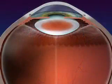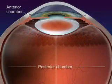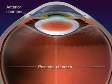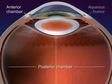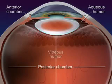The chambers are filled with a watery fluid that gives shape to the eye and helps refract the light rays. The anterior fluid is called the aqueous humor, and the posterior fluid is called the vitreous humor.